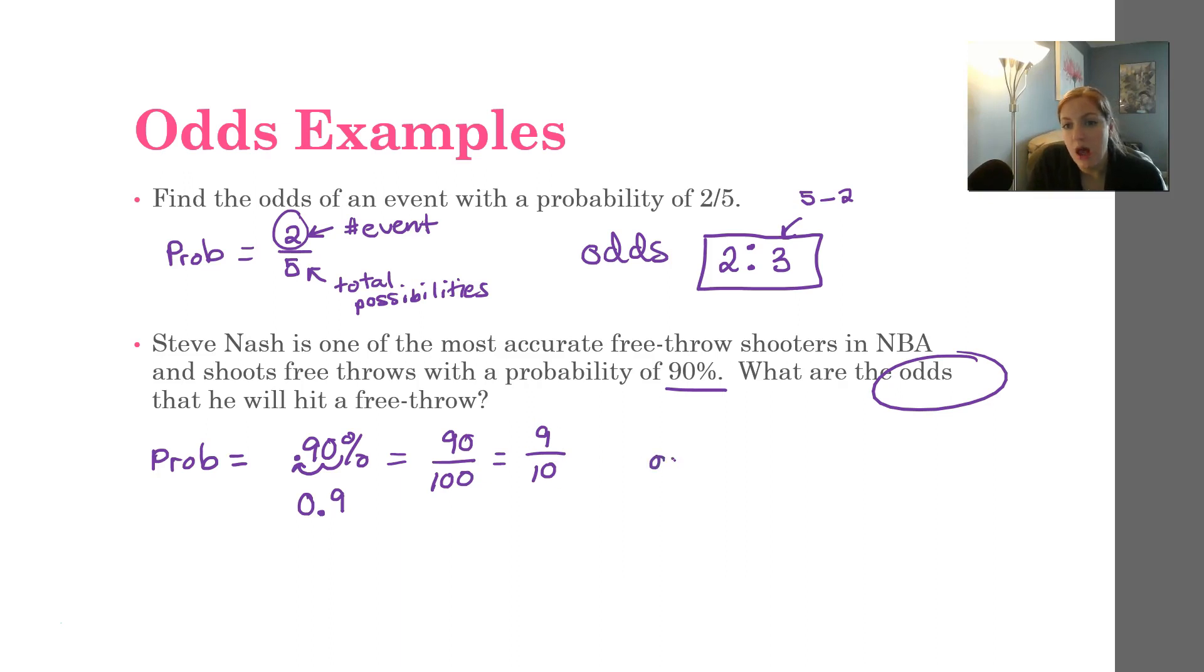Okay, so 9/10. And so the odds, same thing, the top number represents the number of ways the event can occur. So that always comes first. And then the second number is the number of ways it cannot occur. So this is the total on the bottom. So how do we figure out this number? We have to take the total and subtract how many fit the event. So if he shoots 9 free throws, how many is he going to miss? Only 1. Pretty good odds, right? Pretty good odds that he's going to hit that free throw.